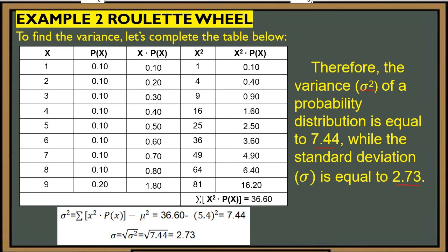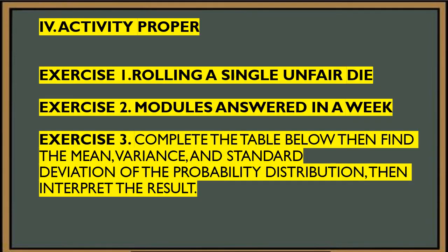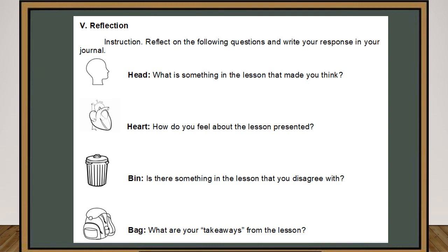For our task this lesson — the Activity Proper — it is found in your learning activity sheets. Solve Exercise 1 on rolling a single fair die, Exercise 2 on modules answered in a week, and Exercise 3 on completing the table. Do not forget to answer the guide questions. Write your reflection in your journal notebook for Lesson 8 — your reflection from head, heart, bean, and diet. Do not forget to send your feedback, comments, or suggestions for the improvement of this video lesson. Thank you — this is the end of Lesson 8.